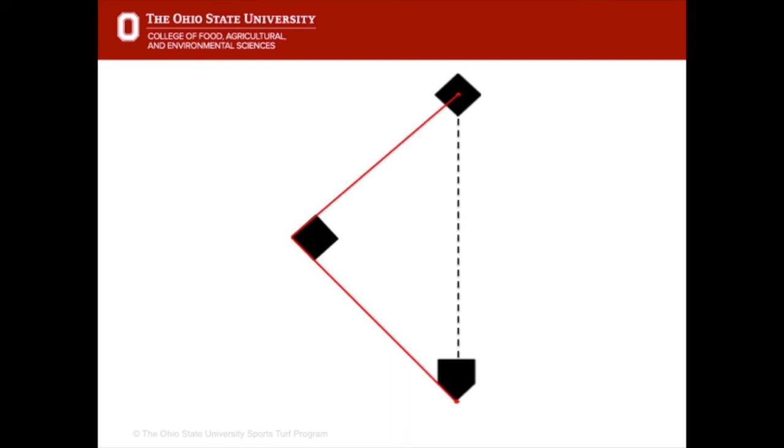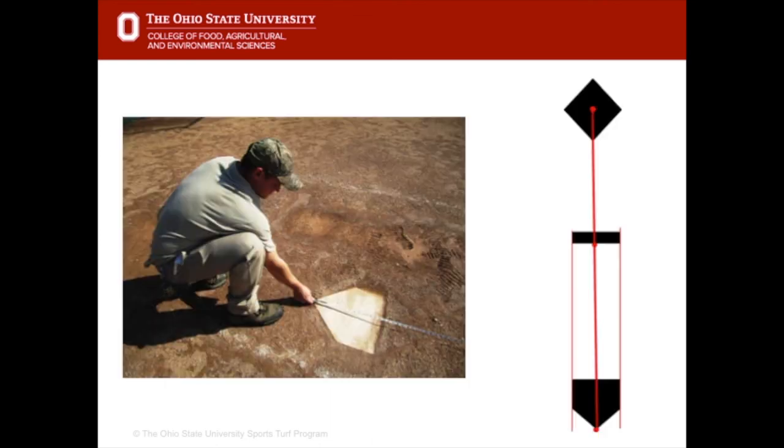Third base is determined by measuring from the apex of home plate to the back corner of third base, and from the back corner of third base to the centre of second base. A string line from the apex of home plate to the centre of second base is used to determine the centre line of the field. The centre line runs from the apex of home plate to the centre of second base, crossing the centre of the pitching rubber.